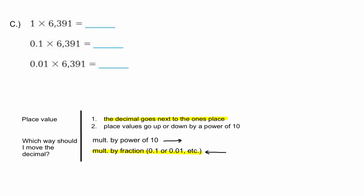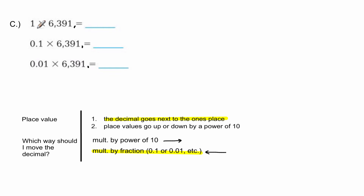Sometimes you move the decimal to the left. When you're multiplying by fractions like one-tenth or one-hundredth, move the decimal to the left. The other number may have no decimal point written, but the decimal always sits to the right of the ones place — so I'll add it in. For 6391 × 1, anything times one is itself, so the answer is 6391.